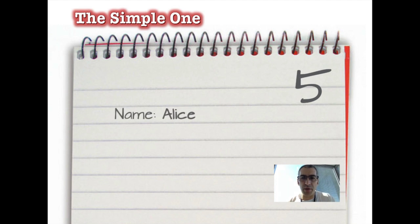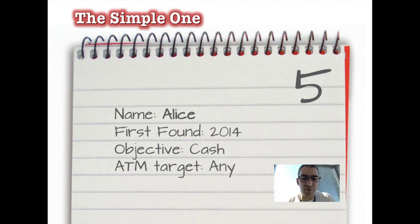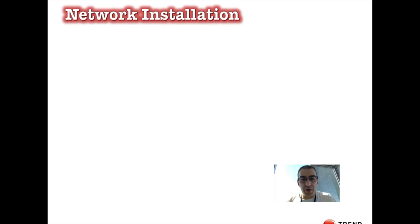Number five has been seen recently — we discovered it ourselves at Trend Micro, and the name is Alice. It's super simple. First found in 2014, though it was only reported in 2016. It just empties the machine — it's dead simple, a super lean malware that does only one thing. It doesn't have any sophistication whatsoever. But the key thing is that it targets any ATM, any brand — so it's pretty complete, but super simple.